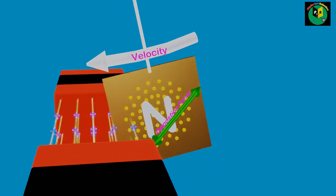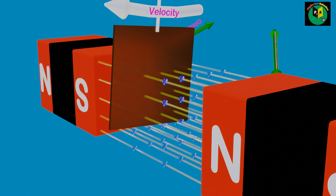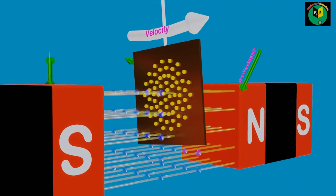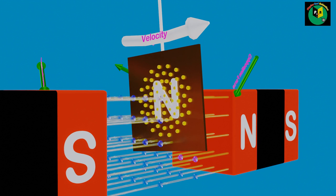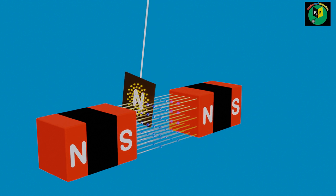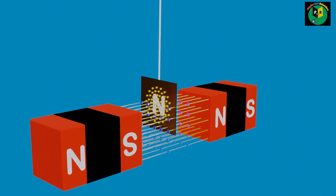Now when the metallic plate moves ahead to exit the magnetic field, the magnetic flux linking to the plate starts decreasing. Hence, to oppose the plate from leaving the magnetic field lines, Eddy Current starts flowing in a clockwise direction to act like a south pole on the surface facing the north pole, creating a force of attraction to oppose the outward motion of the plate. Similarly, Eddy Current flows in an anti-clockwise direction to create a north pole on the surface facing the south pole, developing a force of attraction that tries to pull it back into the magnetic field lines. In this way, a force of opposition acts on both faces of the plate whenever it leaves or enters the magnetic field lines.